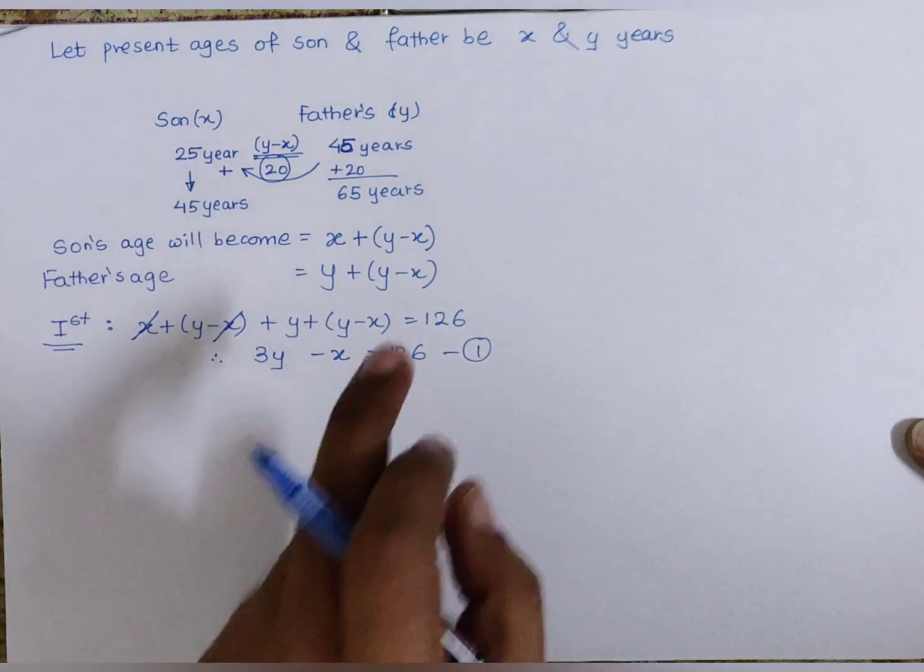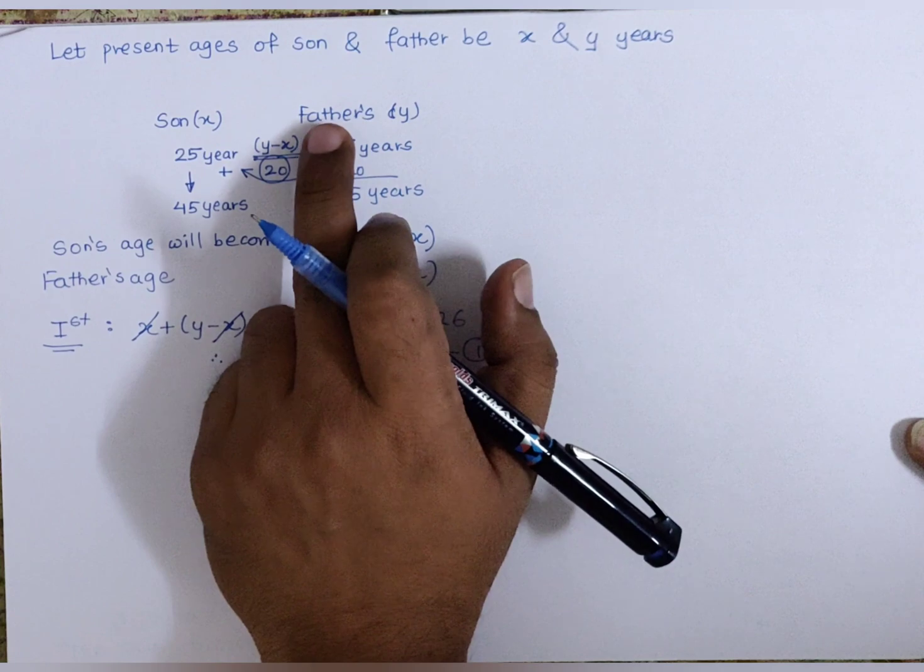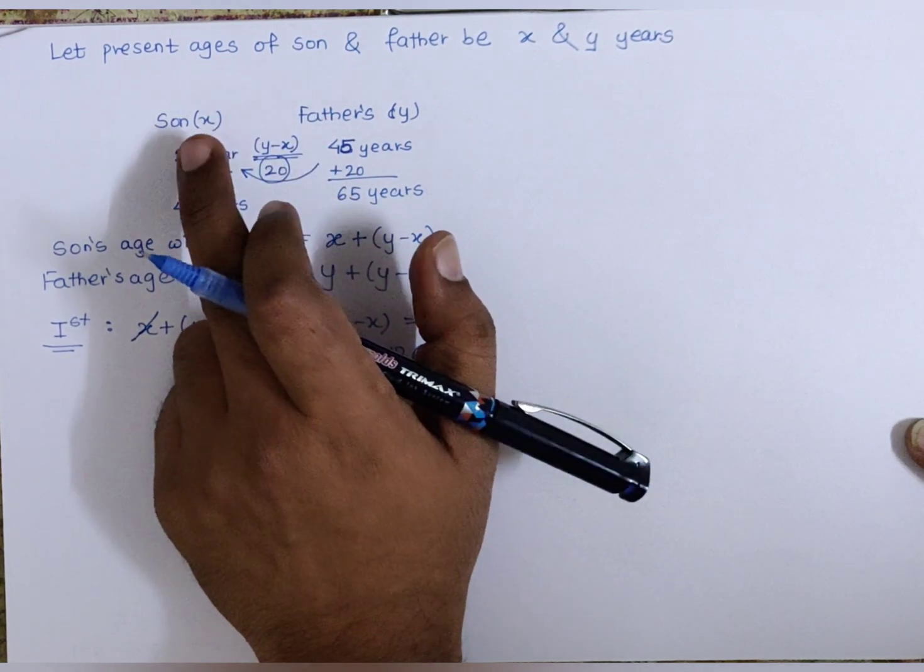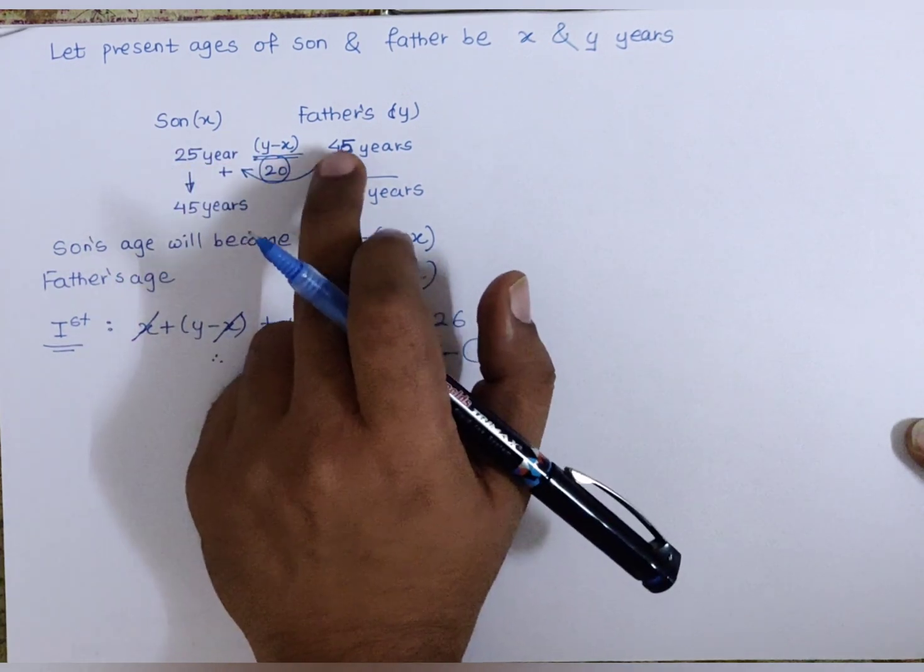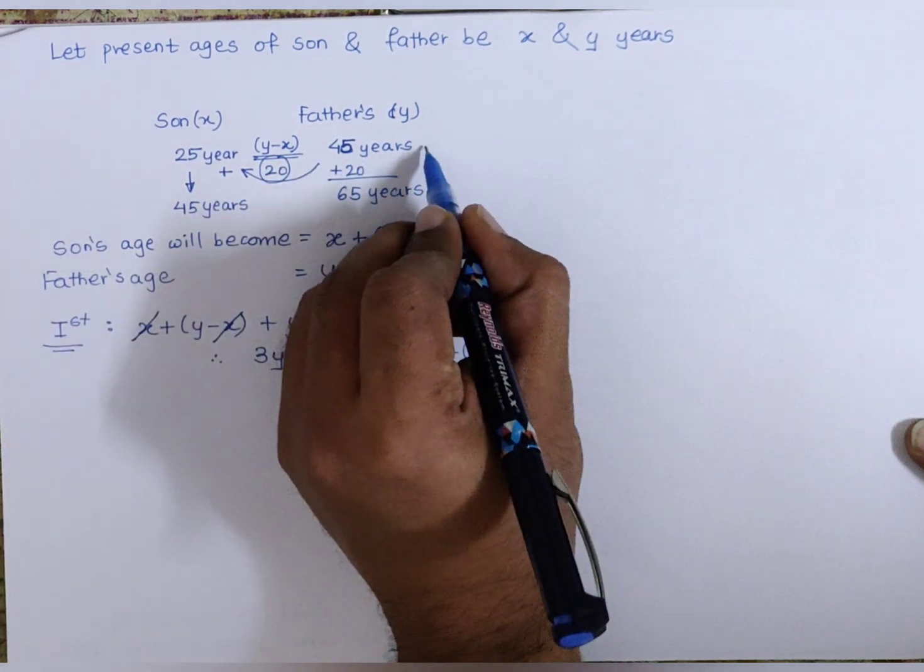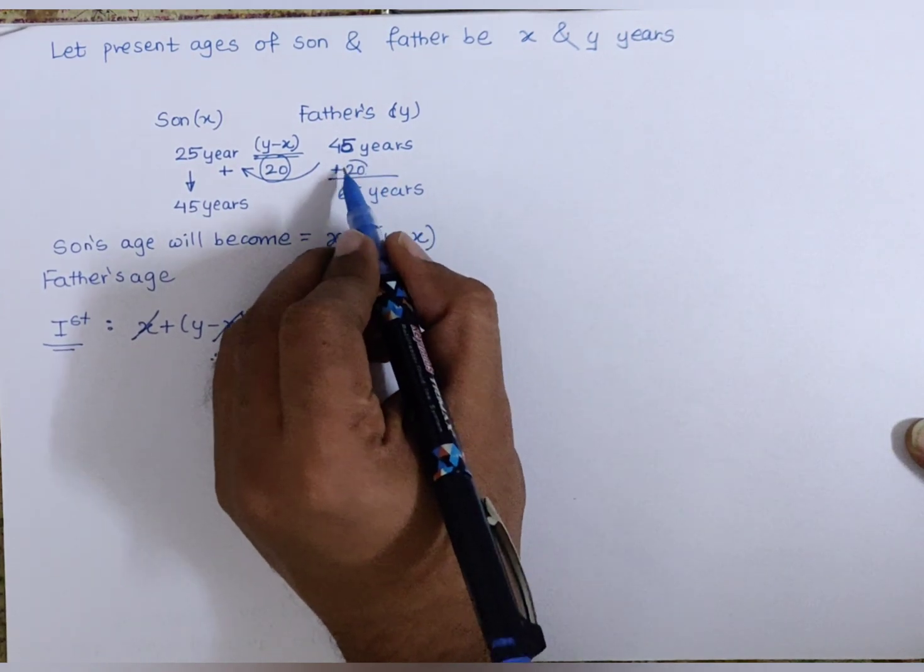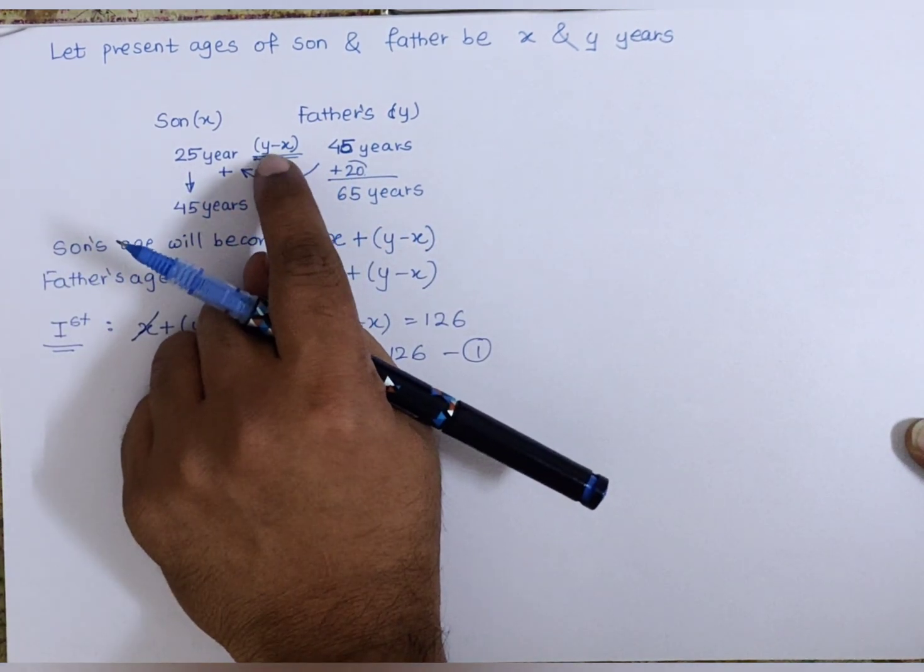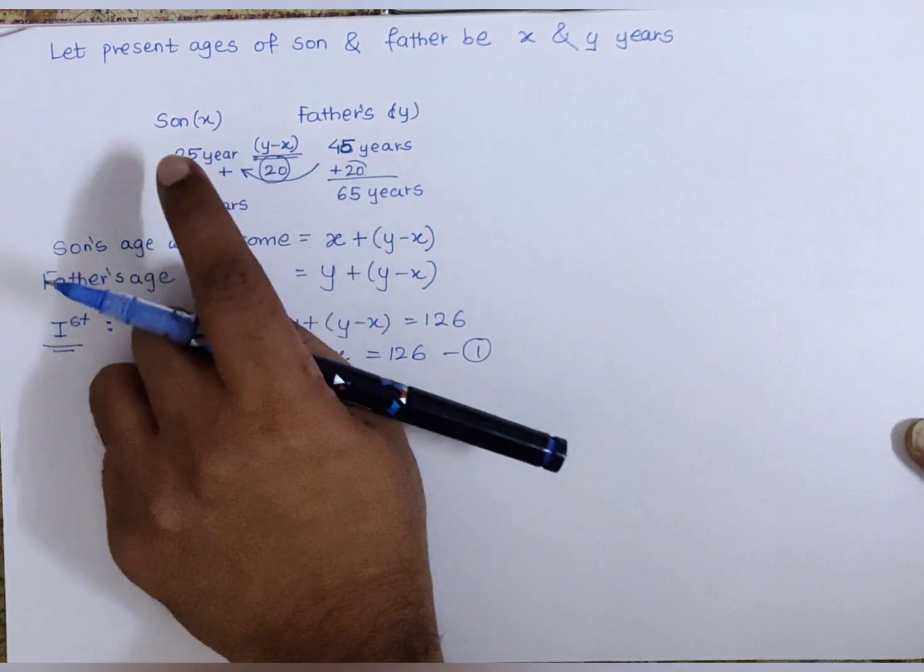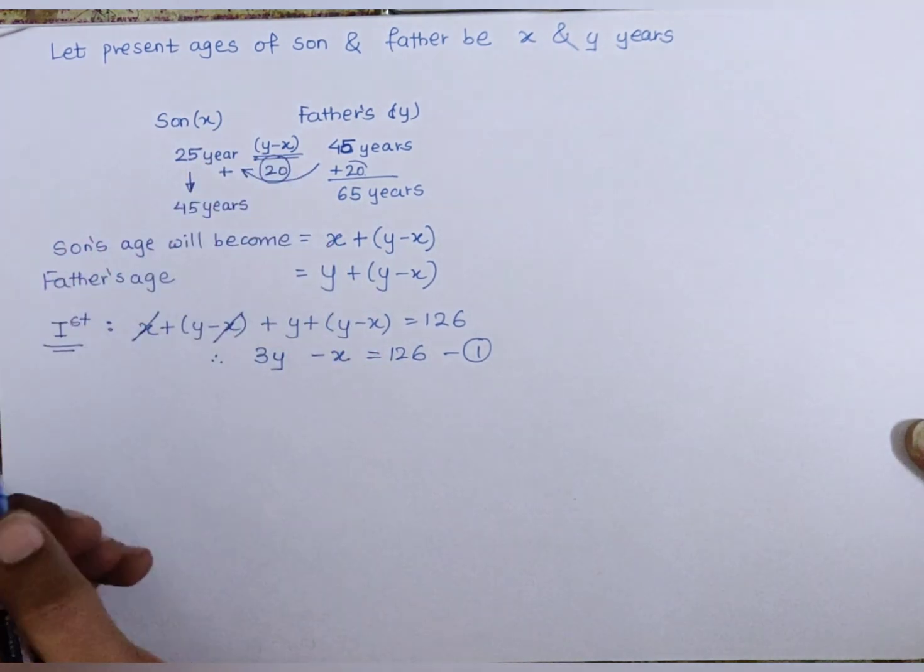The second condition is when the father's age was as old as his son, meaning the father has to get younger by 20 years. So if the father's age now is 45 to get 25, I have to subtract by 20. So I have to subtract this y minus x component in the father's age. Similarly, the son's age will also get subtracted by y minus x years.